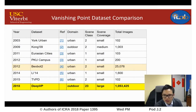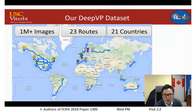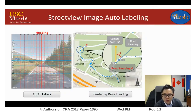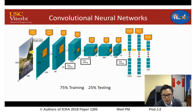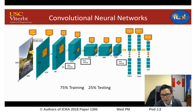Currently, existing vanishing point datasets are way too small and don't have enough diversity to generalize the learning. So we present a new approach to collect more than 1 million images across 21 countries using Google Street View. Because Google Street View contains camera heading and pitch information, we can compute the ground truth VP coordinates in each image. We formulate vanishing point detection as a CNN classification problem instead of regression, by discretizing the vanishing point labels into 25 unique labels, using the first 75% for training and 25% for testing.